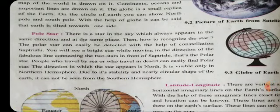Now we will see what the northern hemisphere is. The earth is divided into 2 parts by the equator line — the upper part is the northern hemisphere and the lower part is the southern hemisphere. So if you want to see a polar star, we will see it in the northern hemisphere. Due to its stability — meaning it stays in the same place — and the nearly circular shape of the earth, it cannot be seen from the southern hemisphere.